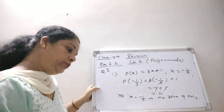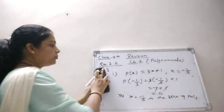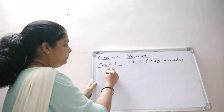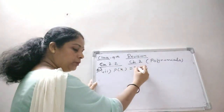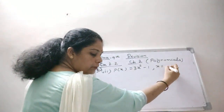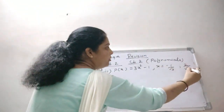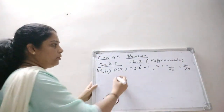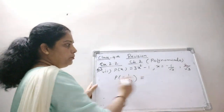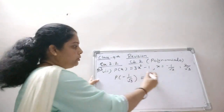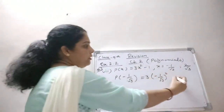All parts are similar. I am taking part number 7 of question number 3. P(x) = 3x² minus 1, and x = minus 1/√3 and 2/√3. First, we take the value x = minus 1/√3. We put P(minus 1/√3) = 3 multiplied by (minus 1/√3)², minus 1. Since x is squared here, we compute (minus 1/√3)².